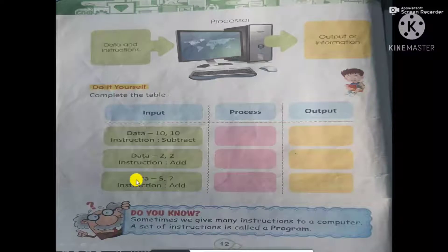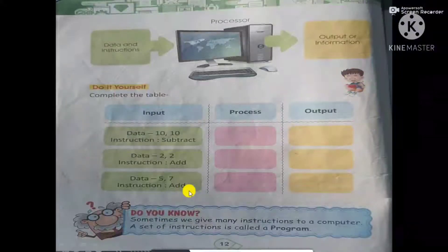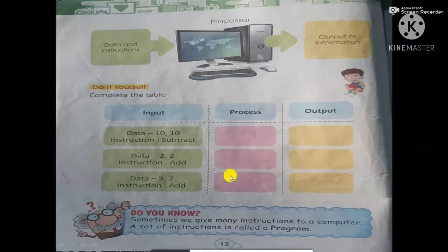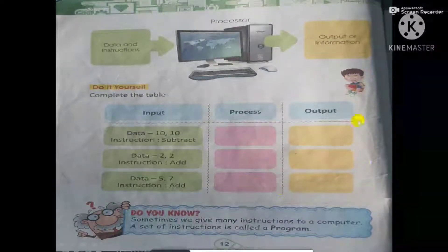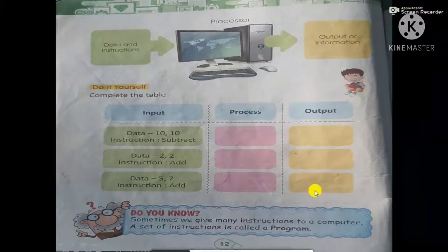Then here data is 5, 7. Instruction is to add. So computer will process 5 plus 7. In output we will get 12.